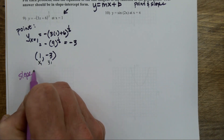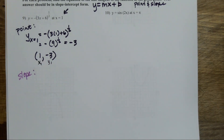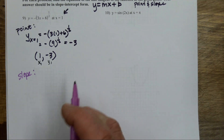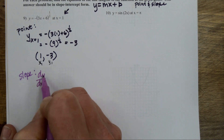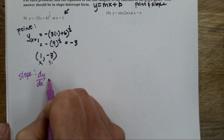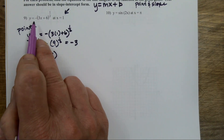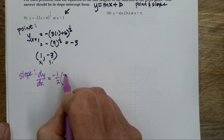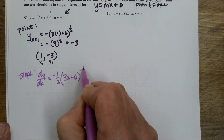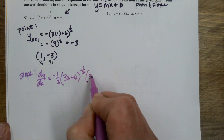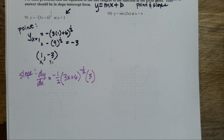Got my point — now I need my slope. Plugged in 1, got out negative 3 — there is my x1, y1. Anytime we talk about slope we should be thinking: derivative. dy/dx — another chain rule. There's a negative in front, so I don't want to lose that. Multiply the power in front, leave the inner as is, lower the power by 1, then the derivative of the inside.